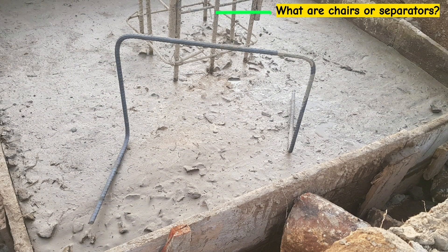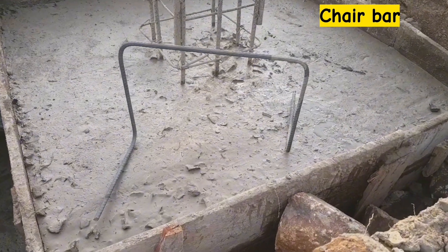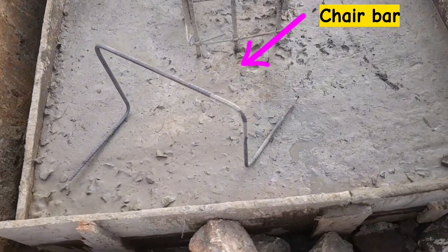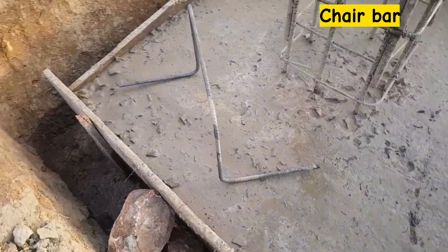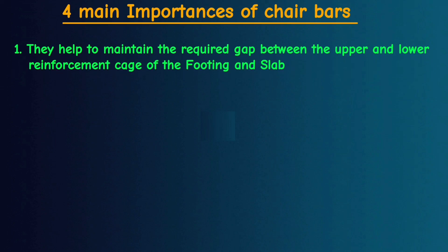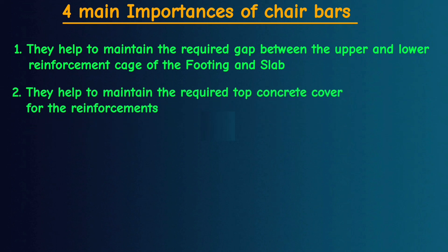Let's first clearly understand what chair bars mean. A chair bar is a support bar placed and tied between the upper and lower reinforcement to maintain stability of main reinforcement bars in the footing or slab. Chairs or separators help to maintain the required gap between the upper and lower reinforcement cage and also help to maintain the required top concrete cover for the reinforcement.